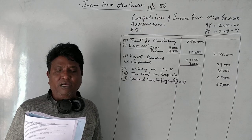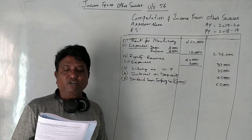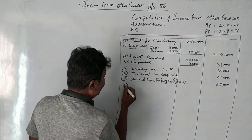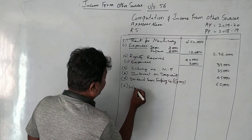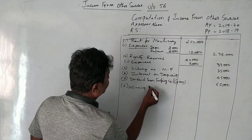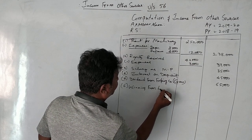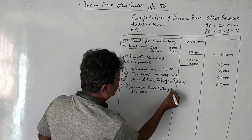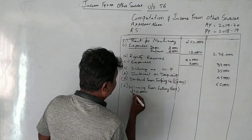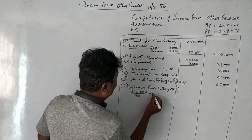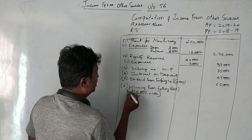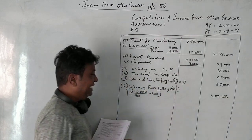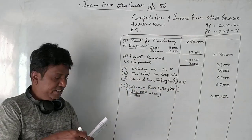Winnings from a horse race — ₹2,10,000 is given as net income. Whenever net income is given, we need to gross it up. Winnings from lottery: ₹2,10,000 is the net amount, which is 70% of the gross. So what is the gross for 100? This comes to ₹3,00,000 as the gross income.